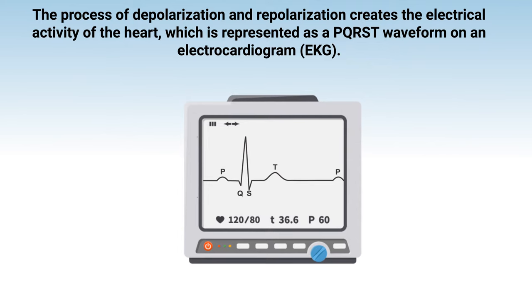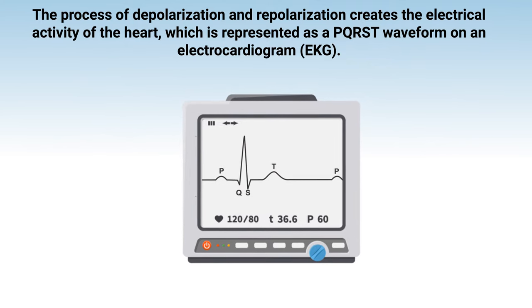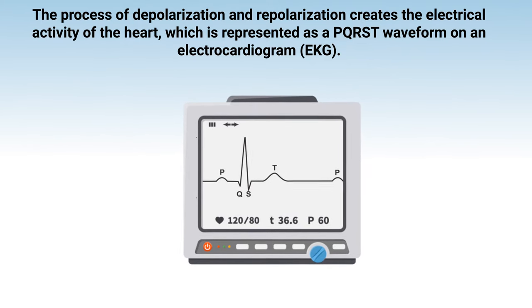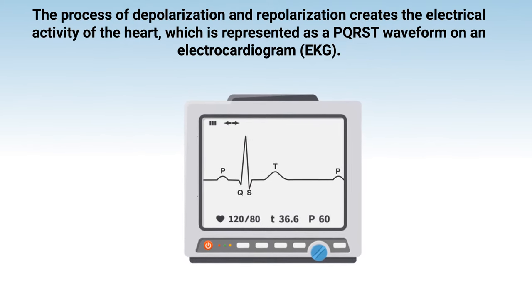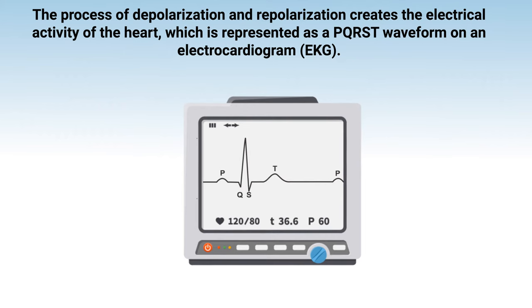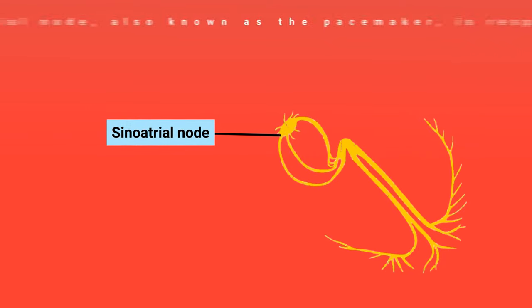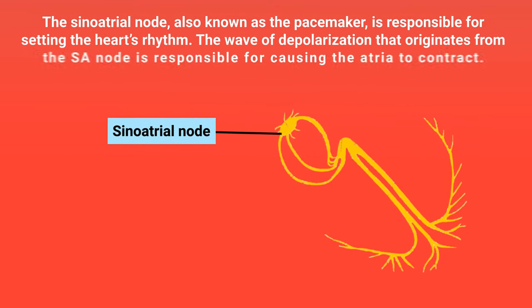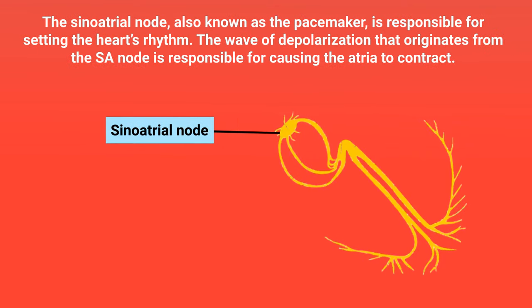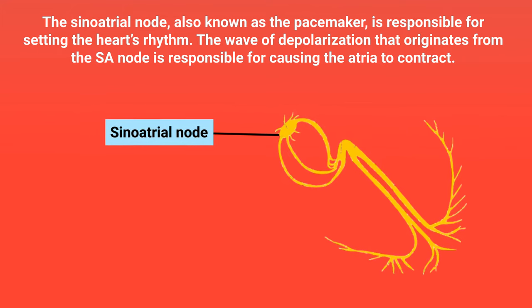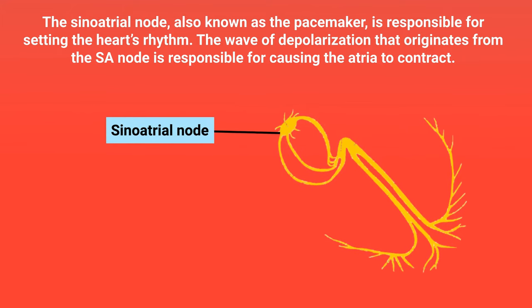The process of depolarization and repolarization creates the electrical activity of the heart, which is represented as the PQRST waveform on an electrocardiogram, or EKG. The sinoatrial node, also known as the pacemaker, is responsible for setting the heart's rhythm.